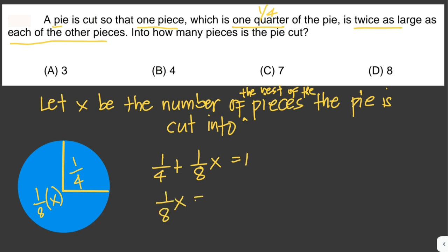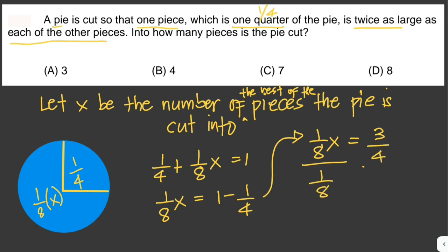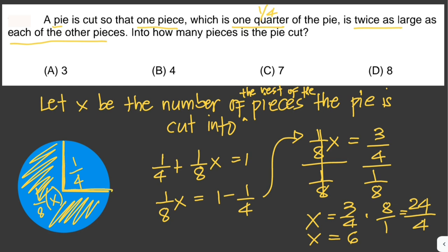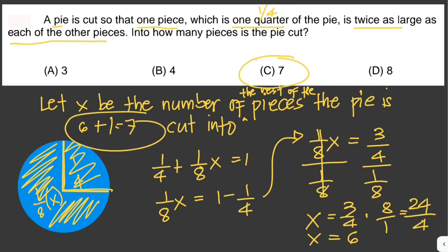Now we solve for x. Rearranging: 1/8 x equals 1 minus 1/4, which is 3/4. Dividing both sides by 1/8 gives x equals 3/4 times 8, which is 24/4, so x equals 6. Therefore the rest of the pie is cut into 6 pieces. Adding the 1 original piece, the whole pie is cut into 7 pieces, so the answer is letter C.